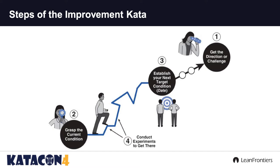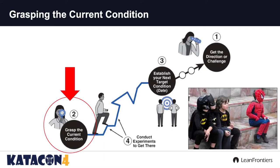Having a starter kata or pattern for grasping the current condition really is a great catalyst or platform to develop faster learning for those we're trying to teach. So here we are with step two. We've established the direction or challenge, and now it's time to grasp the current condition. Grasping the current condition is a little different than the others - setting a direction is exciting, a target condition sets a short-term objective, and experimenting is what we all want to do anyway. But let's not make the mistake that grasping the current condition is anything but a superhero on your path towards achieving your challenges.